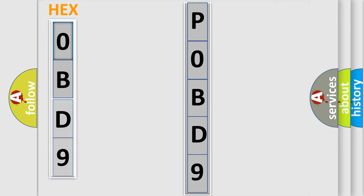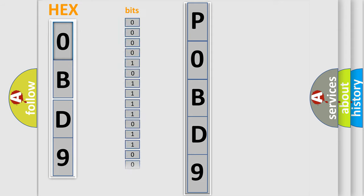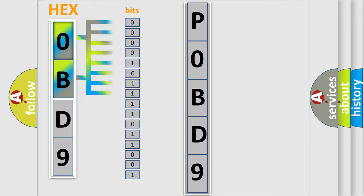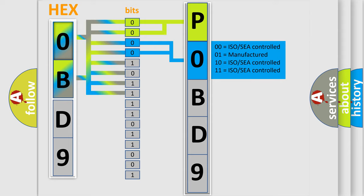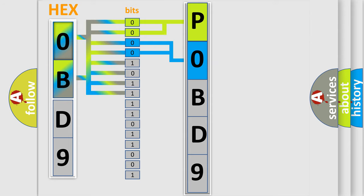The error code is split into two bytes consisting of 16 bits. One bit is the basic unit that each computer works with. The bit has two logical states: zero, meaning low level, and one, meaning high level. By combining the first two bits, the basic character of the error code is expressed. The next two bits determine the second character. The last bits of the first byte define the third character of the code.